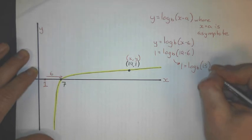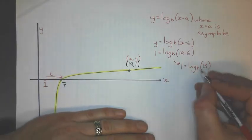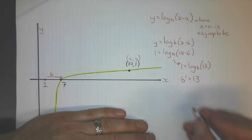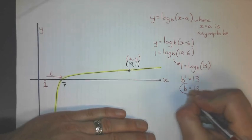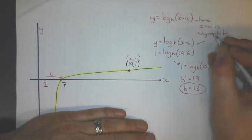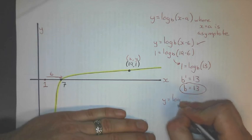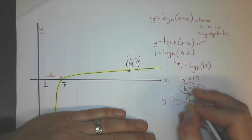Now I'll rewrite this in index form. b to the power of 1 gives me 13. Well, that's fairly easy to solve. That just means b equals 13. I don't need to do anything there. And I rewrite the equation from right here. So y equals log with the base of 13. And it's been shifted 6 units to the right. And that is my equation for that curve.